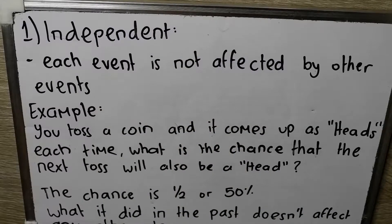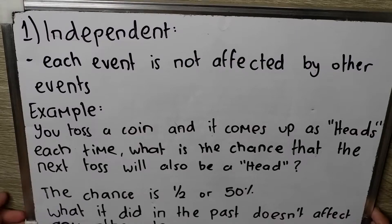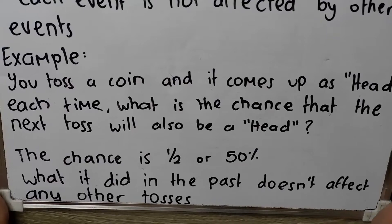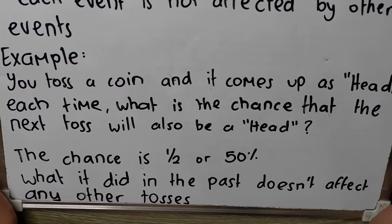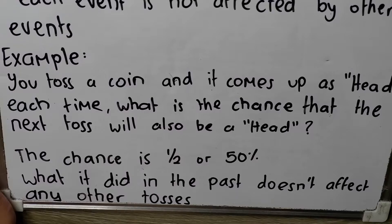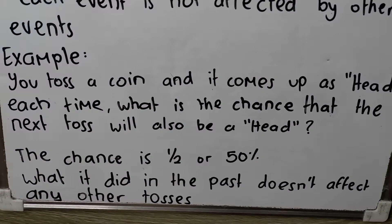This is the first type of event, and it is called independent event. Each event is not affected by other events. For example, you toss a coin and it comes up as heads each time. What is the chance that the next toss will also be a head? The chance is simply 1/2 or 50%. What it did in the past doesn't affect any other tosses.